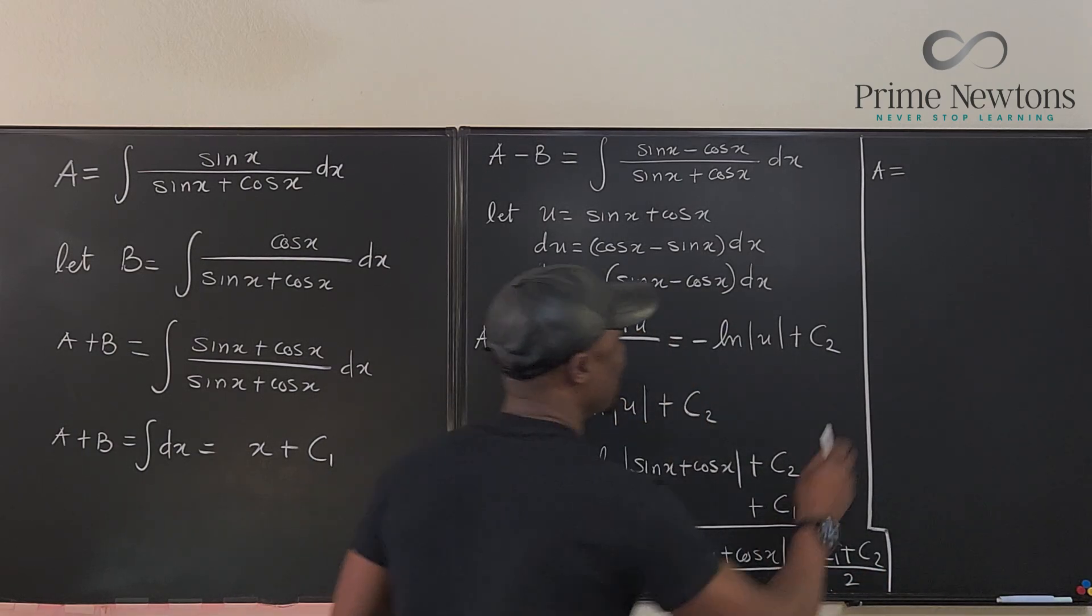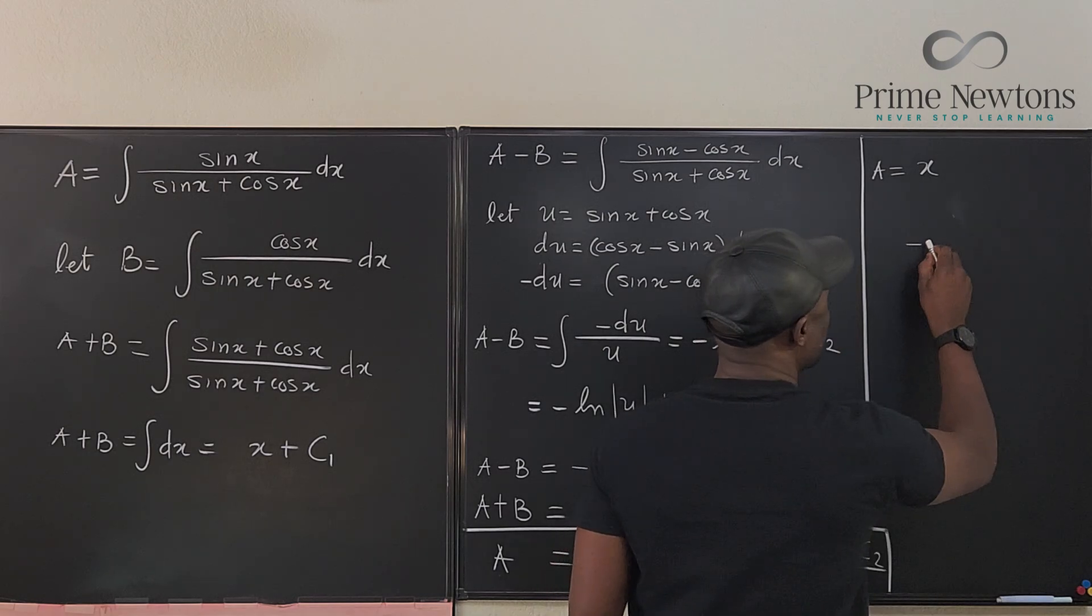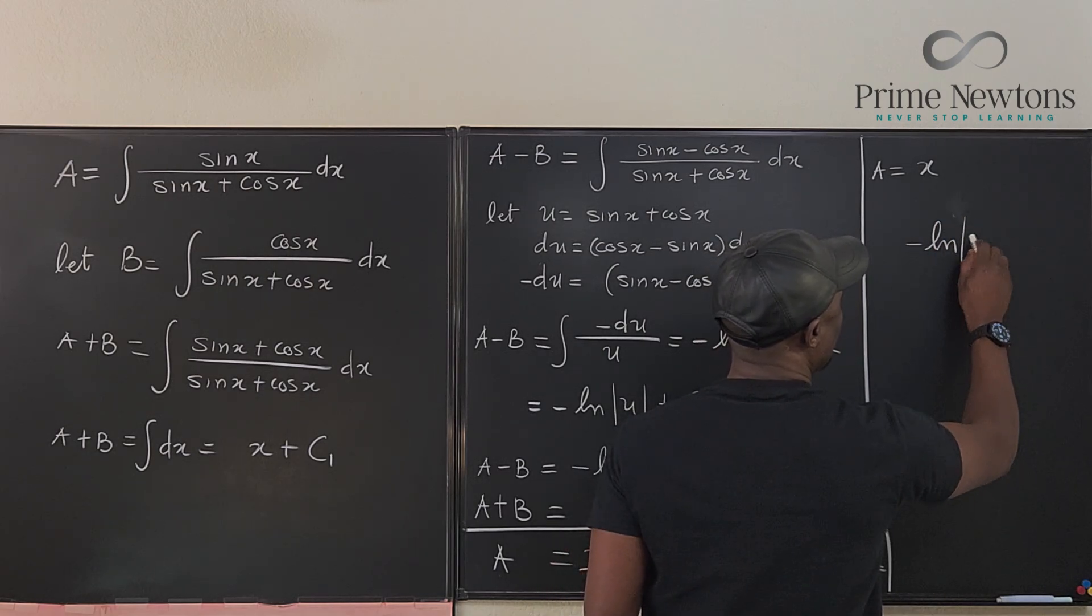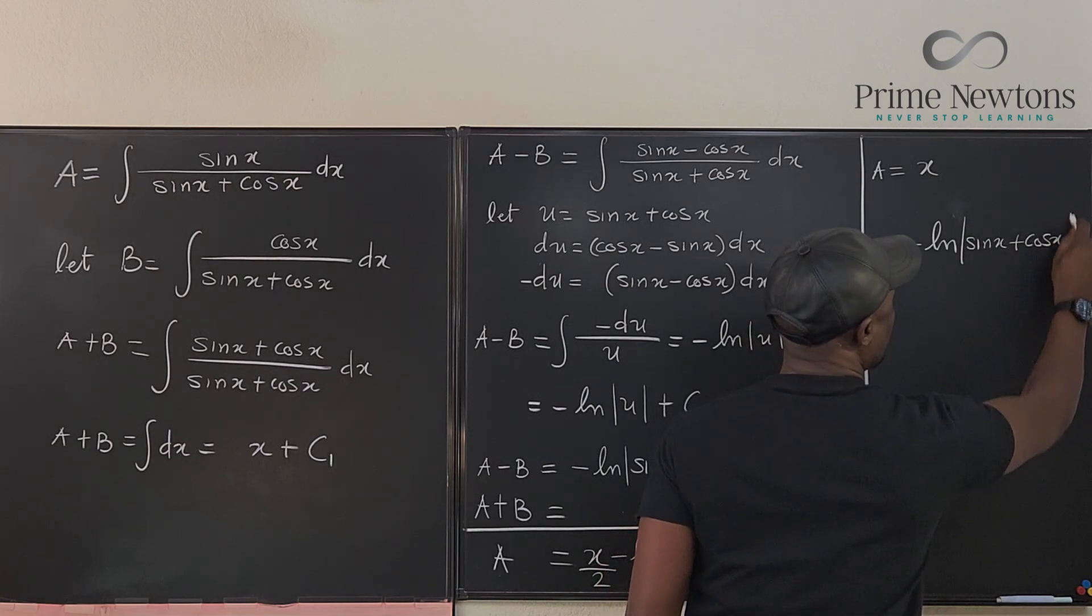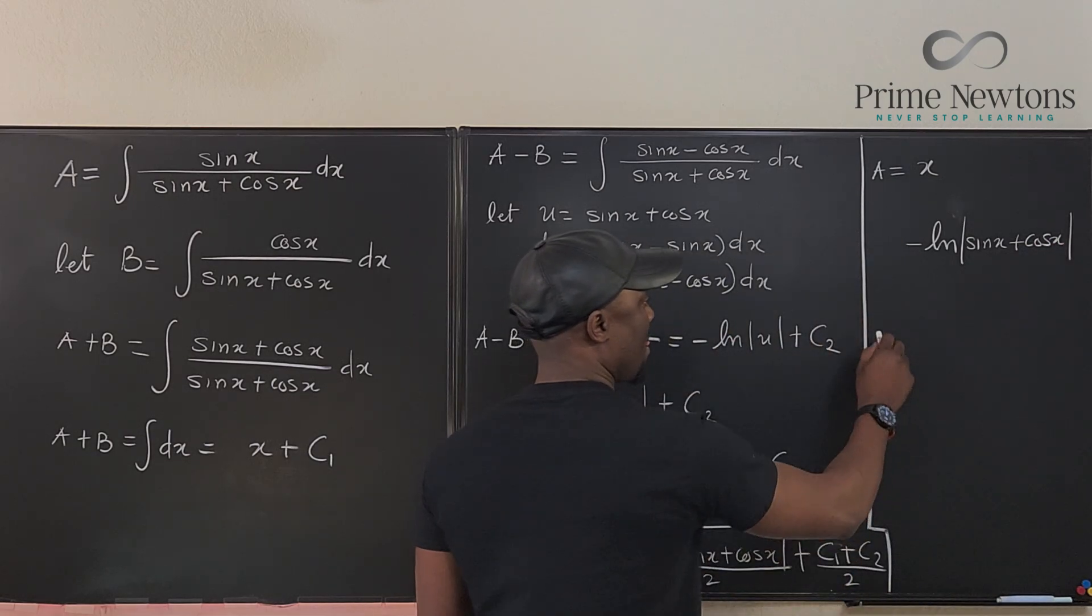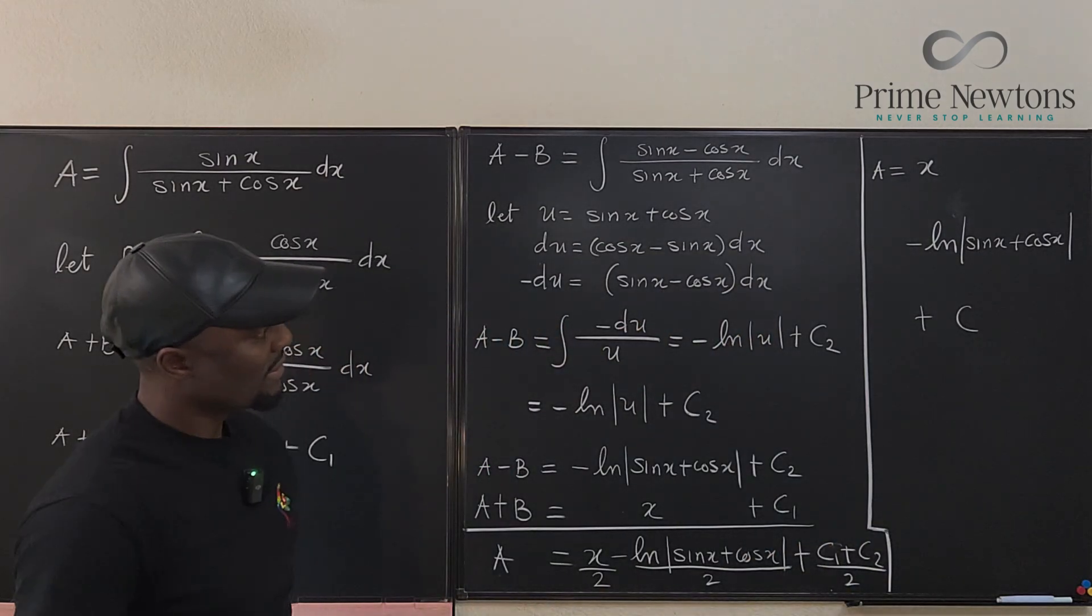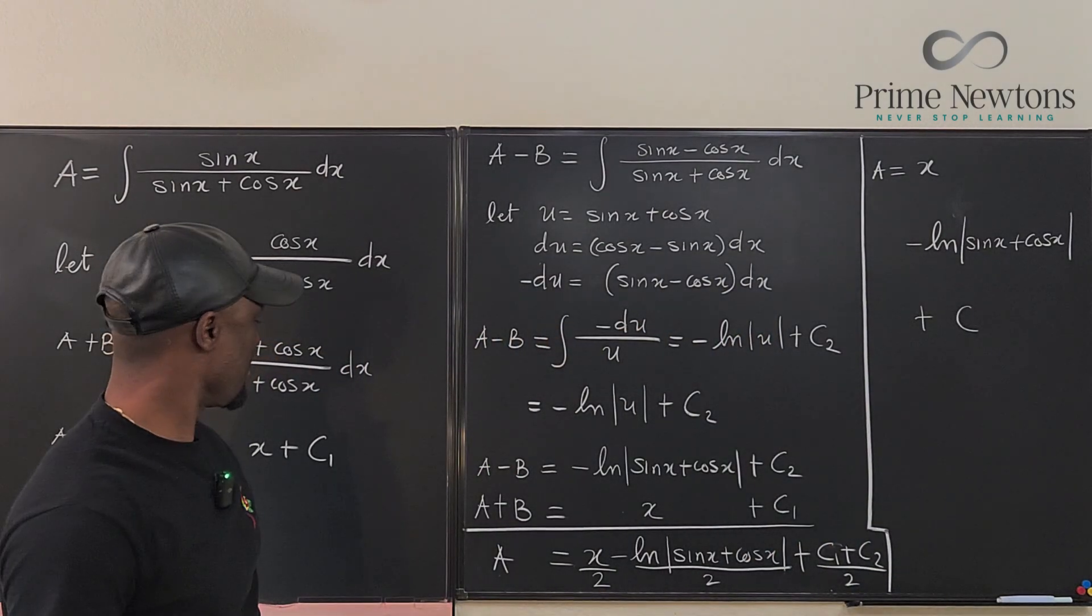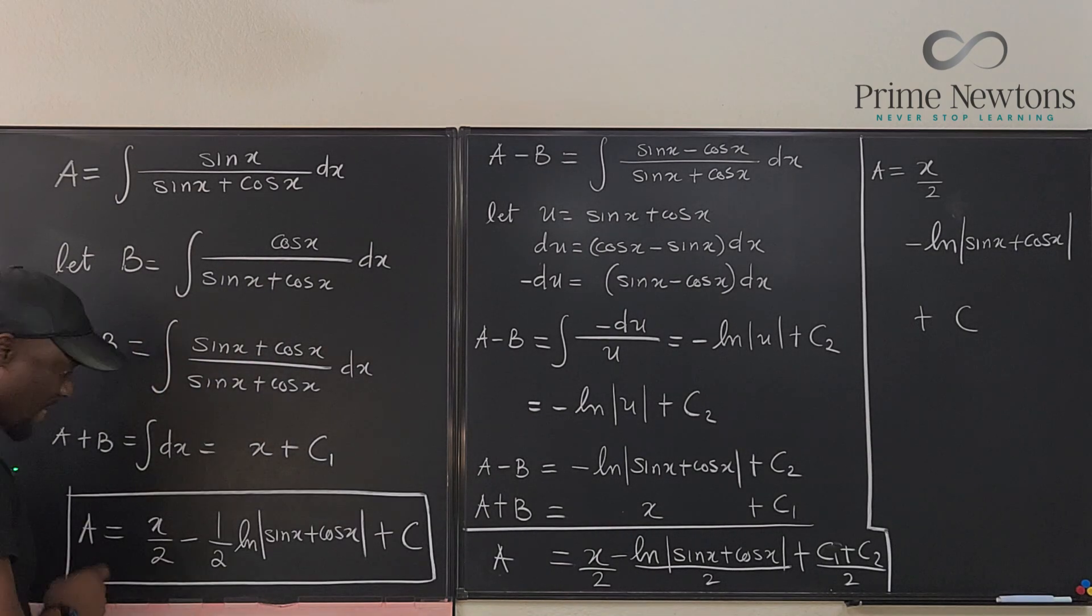Which gives me my final answer to be x over 2 minus the natural log of sin(x) plus cos(x) over 2 plus C. I'm going to write the answer here. That's the integral.